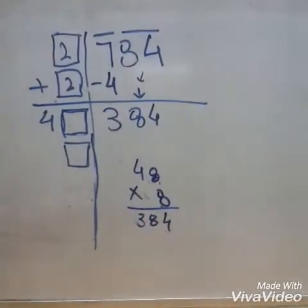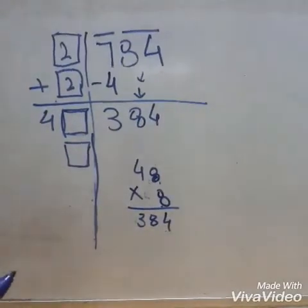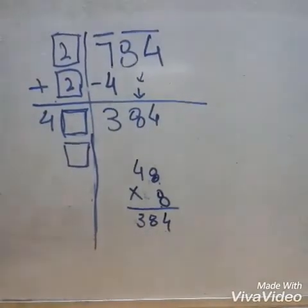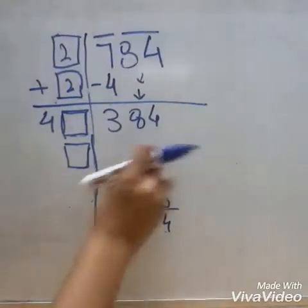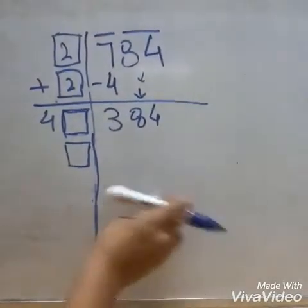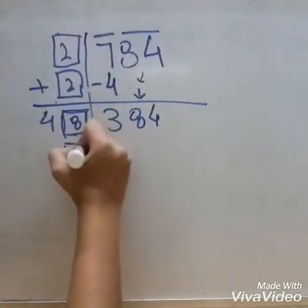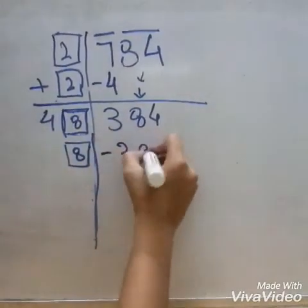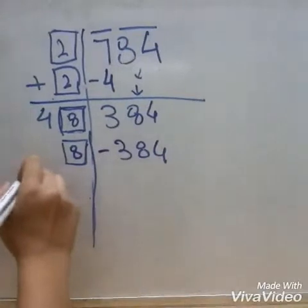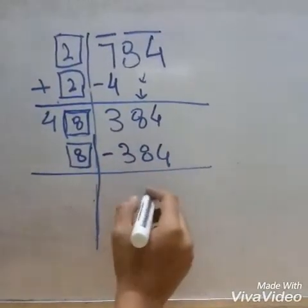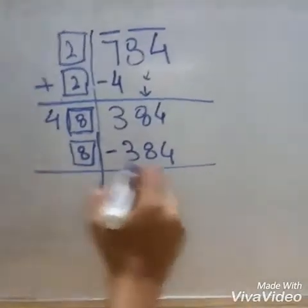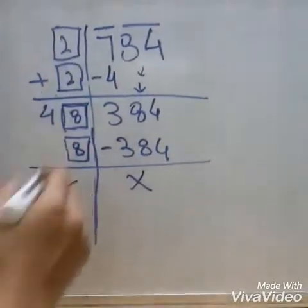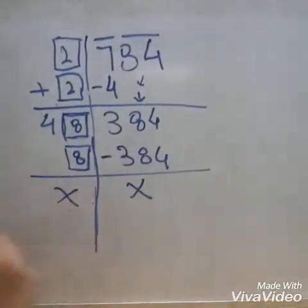So the answer is 384, which is equal to 384 over there. We will take the option with 8. We will put 8 in this box and we will subtract 384. And here the answer is 0, so the method is finished and we put a cross.